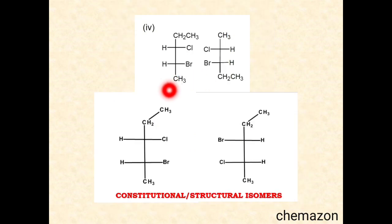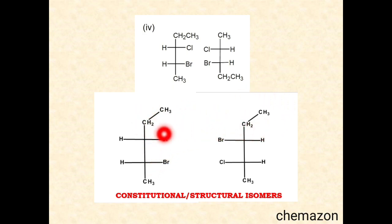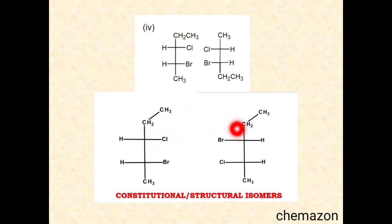In the fourth set, this is the first molecule and this is the second. When we rotate the second molecule, above it is an ethyl group and at the bottom a methyl group. Starting numbering from the aldehyde end, at the second position in the first molecule there is a bromine atom, but in the second molecule there is a chlorine atom. The bond connectivity itself is different, so these molecules are called constitutional or structural isomers.